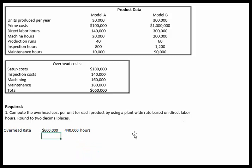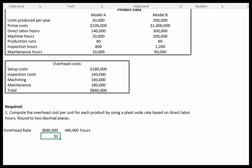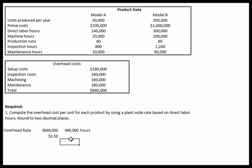We simply take all of the overhead costs — the $660,000 — and divide that by the 440,000 hours. After expanding the view in Excel to correct for rounding, the result is $1.50. But what does that mean? $1.50 per direct labor hour — that is the rate at which we're going to apply overhead to each of the two products.